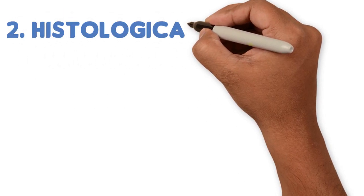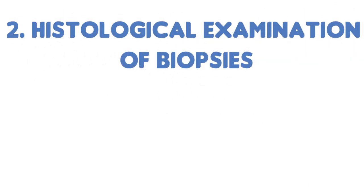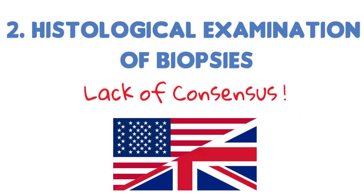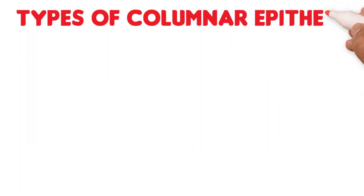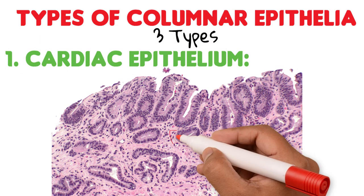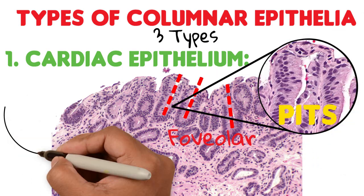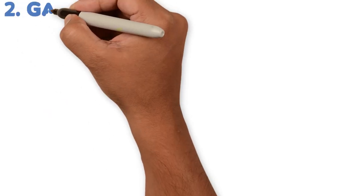The second criterion to diagnose Barrett's esophagus is the histological examination of said biopsies — and here is where the lack of consensus appears. Three types of columnar epithelia can appear in Barrett's esophagus. Number one: cardiac epithelium, which has a foveolar surface, meaning that it has many pits, and has glands with mucus-secreting cells, as we can see here.